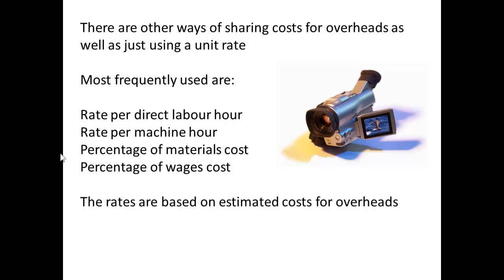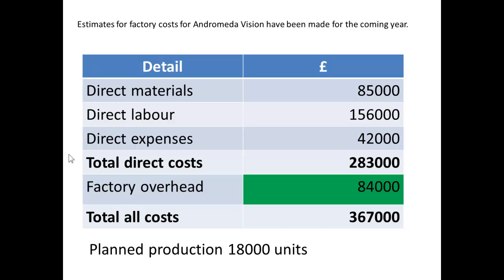It is important to notice these rates are going to be based on the estimated costs of overheads. For example, the estimated costs for the factory and drama division are: direct materials $85,000, direct labour $156,000, direct expenses $42,000, giving total direct costs of $283,000. The factory overhead is $84,000, so total costs are $367,000, with production of 18,000 units.